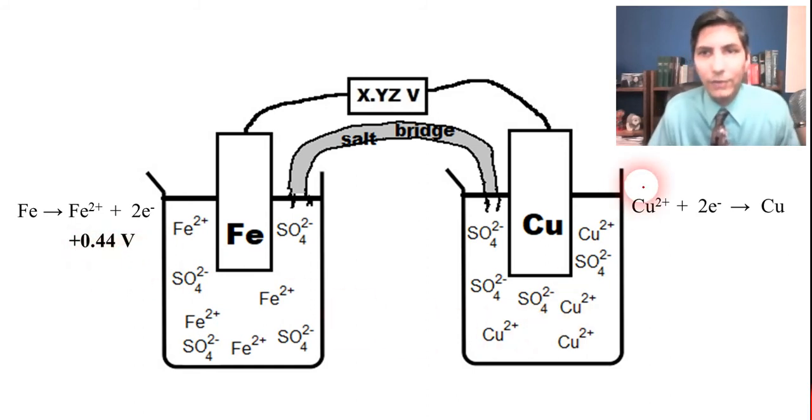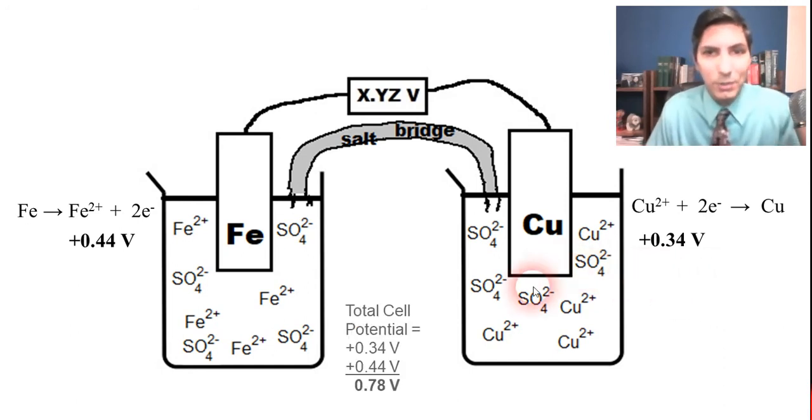And then this half reaction over here has a voltage or a potential difference of positive 0.34 volts associated with it. And so guess what? To find the potential difference of the total battery of this entire galvanic cell, we just add those together. So when you add them together, you'll find that the voltage or the potential difference that's coursing through the wire here is 0.78 volts.